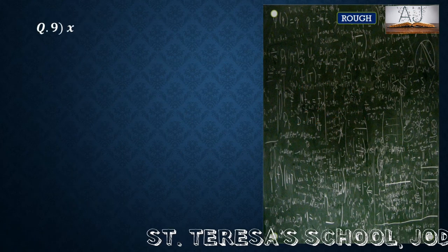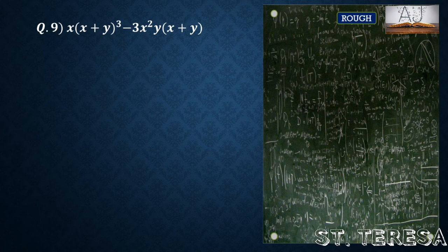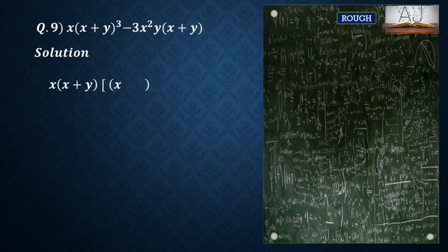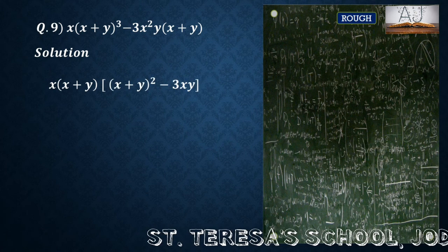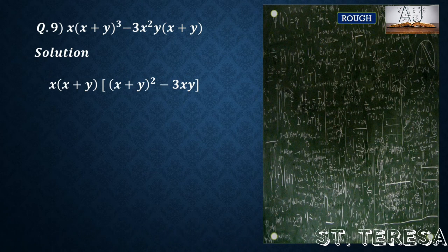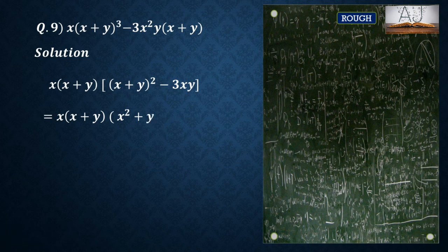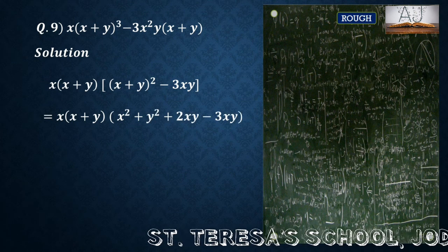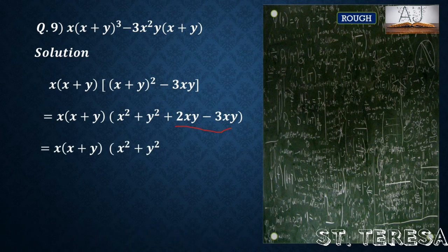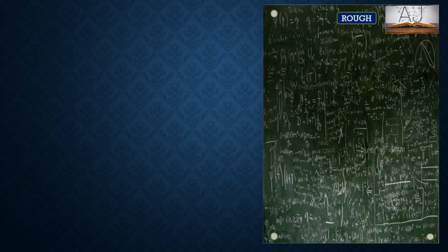Question number 9: x(x plus y) whole cube minus 3x square y(x plus y). From both terms we have x and (x plus y) common. When taken common, in the first term (x plus y) whole square is left, and in the second term only 3xy is left. Expanding (x plus y) whole square as x square plus y square plus 2xy, then minus 3xy, the like terms simplify: 2xy minus 3xy gives minus xy. So we get the factors x, (x plus y), and (x square plus y square minus xy).